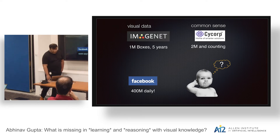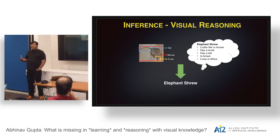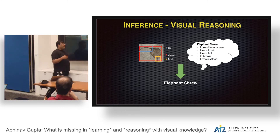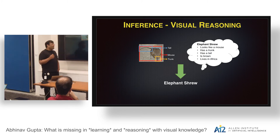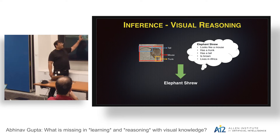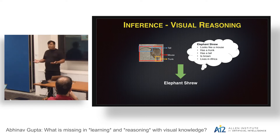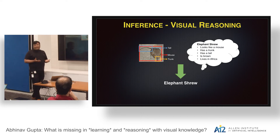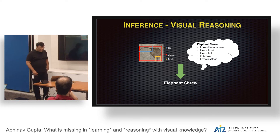On the inference side, humans have the amazing ability to detect or recognize objects even with zero examples. If someone told you there's a category called 'elephant shoe' — it looks like a mouse, it has a trunk, it has a tail — and you see this animal in the next image, you can easily say it's an elephant shoe, even though you've never seen it before. Our current deep learning approaches cannot do that. We need to see at least 100 examples to do any kind of detection for any category.